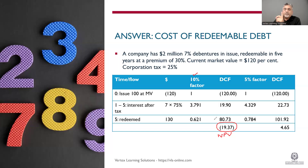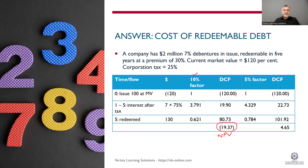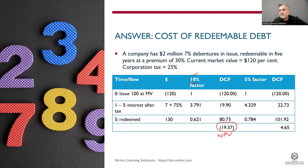When calculating IRR, you always need two NPVs — one positive and one negative. We already have a negative NPV at 10%, so we need a positive NPV at a lower discount rate. To get a positive NPV, you must decrease the discount rate. Let's try 5% — you can try 6% as well — and see if a positive NPV results.